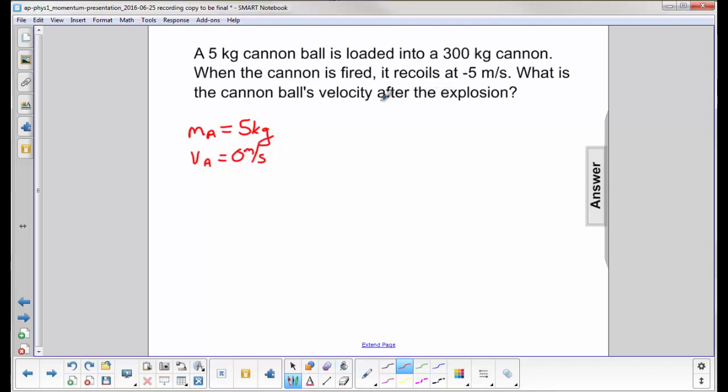When the cannon is fired, the cannon is mass B at 300 kilograms, and it recoils at negative five meters per second. So these are the given values.